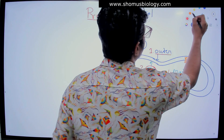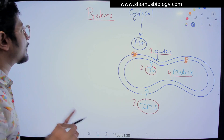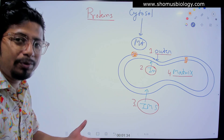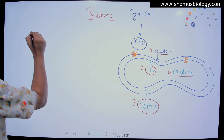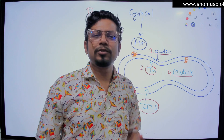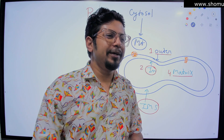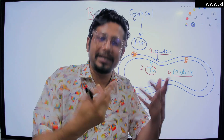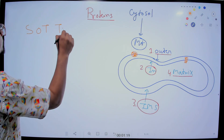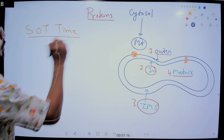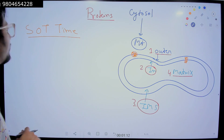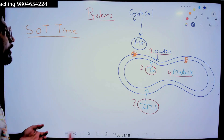I believe you have heard some of these protein names before, and I am going to give you a clear idea here. The simple mnemonic we need to use to understand and memorize them is: simply remember 'Short Time.' What I can write is S-O-T time. If you remember 'Short Time,' you will easily remember all the protein complex names involved in the process of mitochondrial protein translocation.